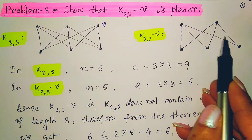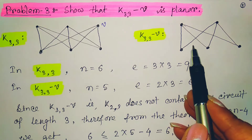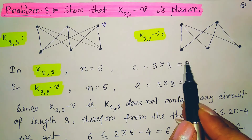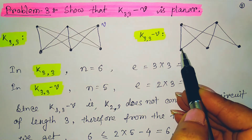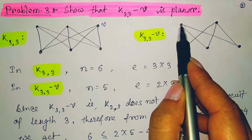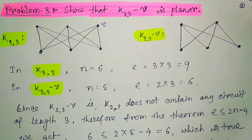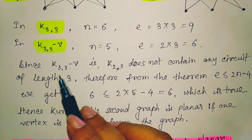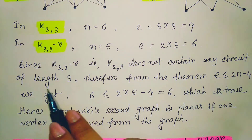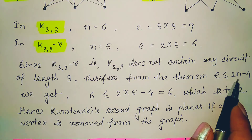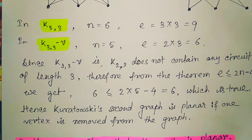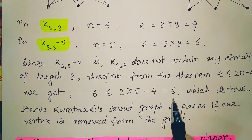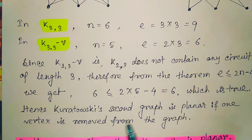Since the reduced graph is a bipartite graph, any circuit formed has an even number of edges — it does not contain any circuit of length 3. Therefore we apply Theorem 4 for the planar graph: E ≤ 2N − 4. Substituting E = 6 and N = 5 gives 6 ≤ 6, which is true. Hence Kuratowski's second graph is planar if one vertex is removed.